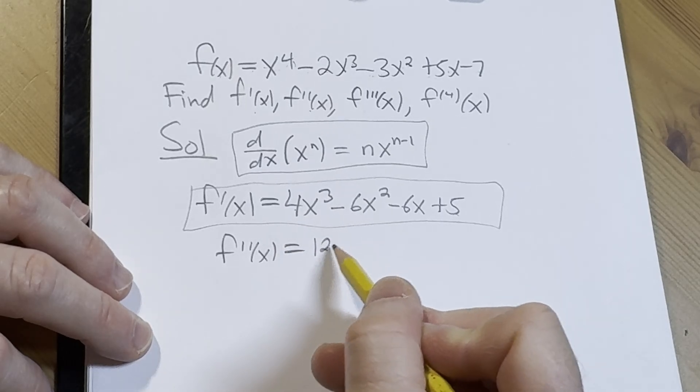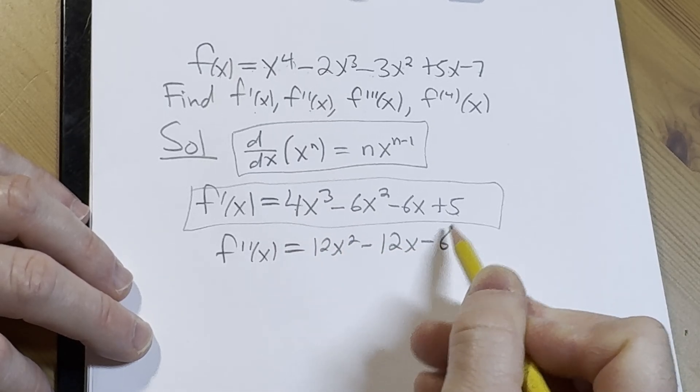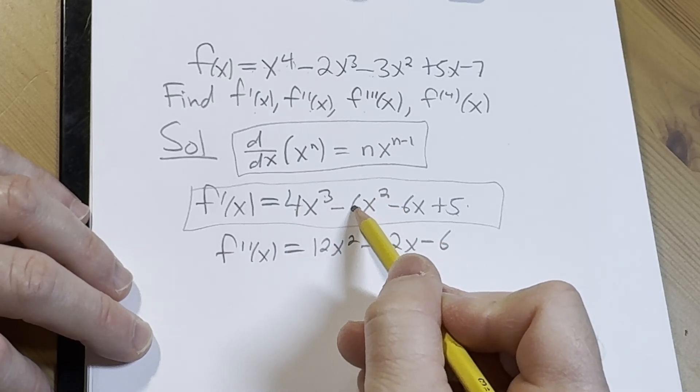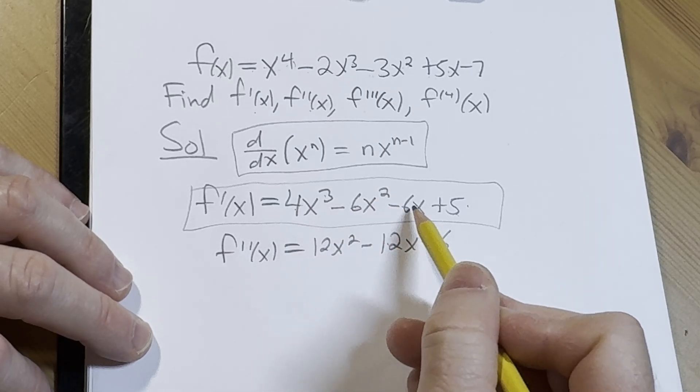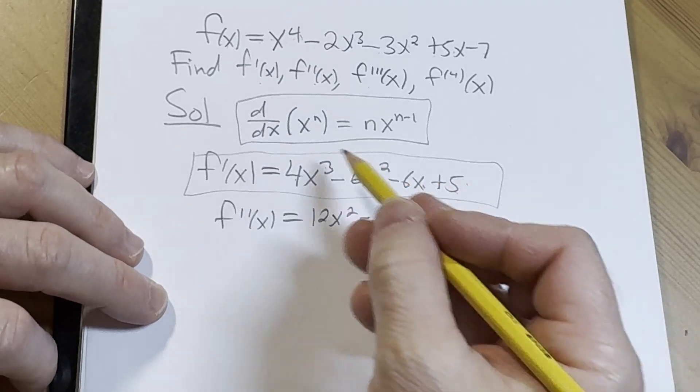It's going to be 12x^2 - 12x - 6. Again, 12x^2. 2 times 6 is 12, subtract 1 from the exponent. Derivative of 6x is 6. You just have the negative. Derivative of 5 is 0.